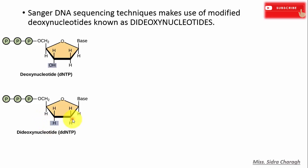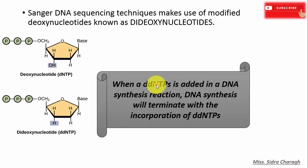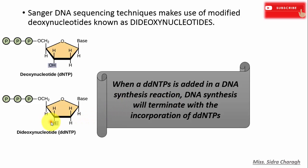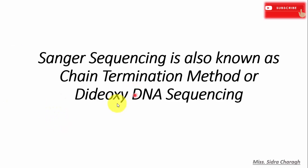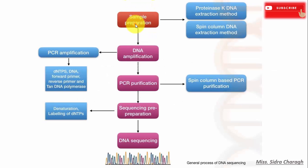If in a DNA synthesis reaction a dideoxynucleotide is added, DNA synthesis will terminate upon its incorporation, because there is no three prime hydroxyl group present for further extension of the DNA chain. For this reason, Sanger sequencing is also known as the chain termination method or dideoxy DNA sequencing.